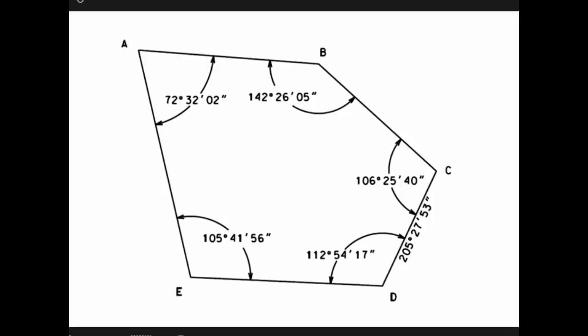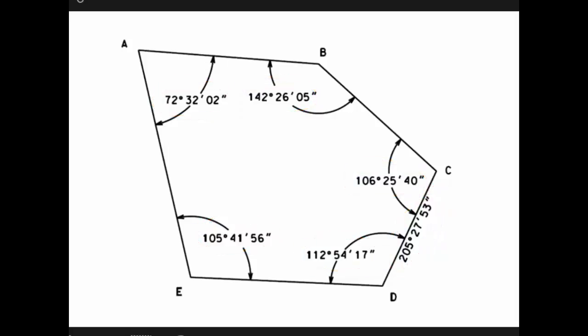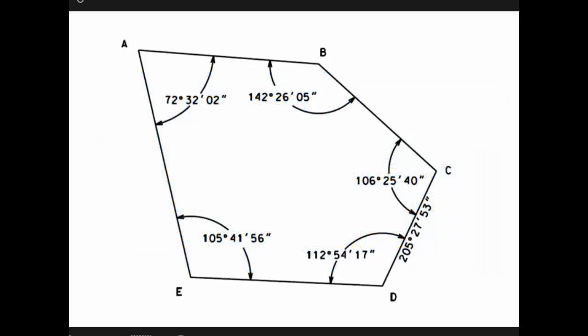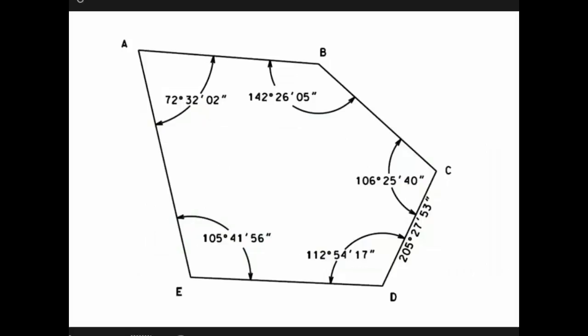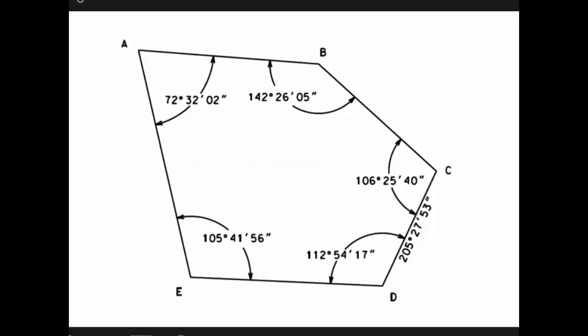So what you've seen here is two different directions for calculating the azimuths in a loop. We need all the interior angles and one known azimuth. For the counterclockwise direction, we added the interior angle to the back azimuth of the previous course. For the clockwise direction, we subtracted the interior angle from the back azimuth of the previous course. By using the worksheet, you'll find the process organized, methodical, and will give consistent results.